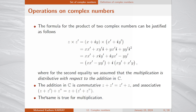From the definition of addition, we can check that addition is commutative — z plus z prime equals z prime plus z — and also associative. Similar properties hold for multiplication: multiplication is also commutative and associative within the set of complex numbers.